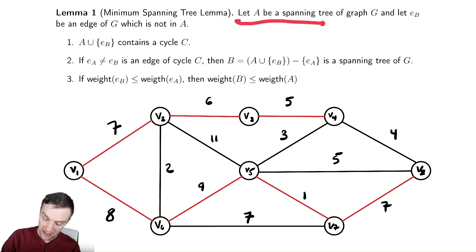This lemma says, let A be a spanning tree, so this red stuff is all A, and let E sub B be an edge of G which is not in A. Let's find one such edge. One edge might be this edge here. Let's actually color that in blue to highlight what we mean.